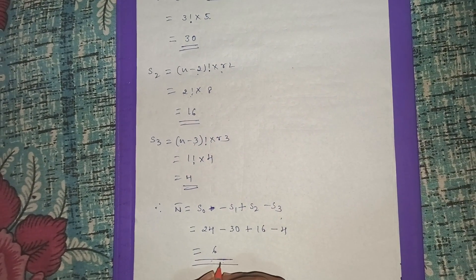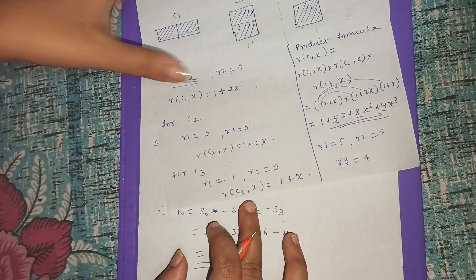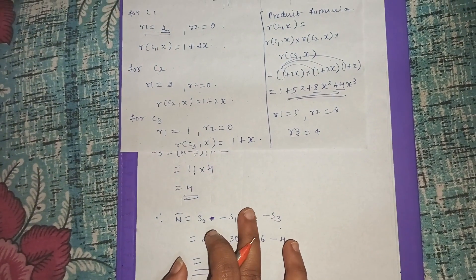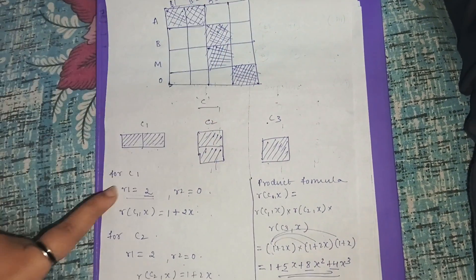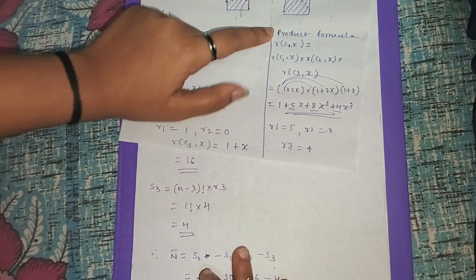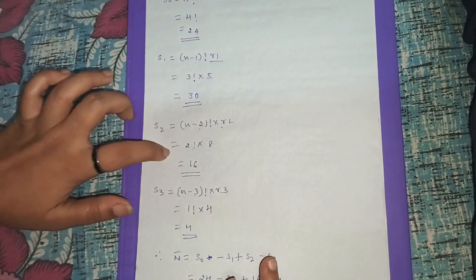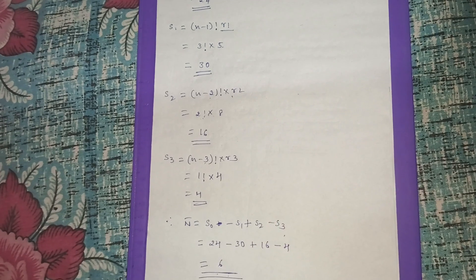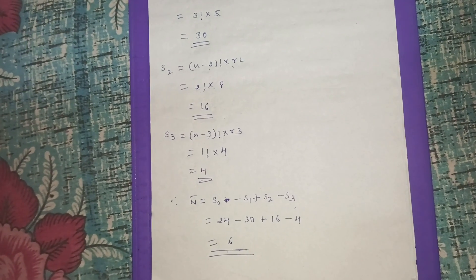The final answer is 6. This is an important problem asked several times. The steps are: draw the data table, shade forbidden positions, identify components C1, C2, C3, find the product rook polynomial to get r1, r2, r3, then compute S0, S1, S2, S3 and apply the inclusion-exclusion formula. Thank you students — see you in the next video.